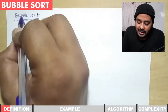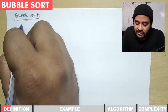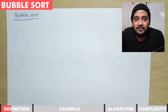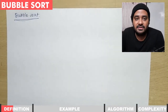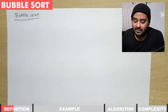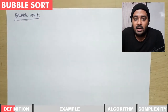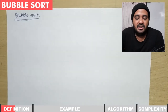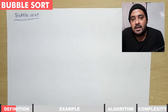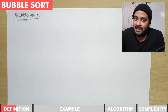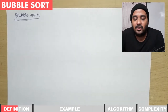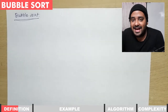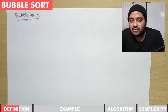Bubble sort is an example of a simple brute force algorithm. With brute force there is no specific procedure being followed. Bubble sort works in a simple, plain, old-fashioned way — it takes a couple of adjacent elements and compares them. If they are in order it leaves them as such; if not, it swaps those two elements and then moves on to the next element.